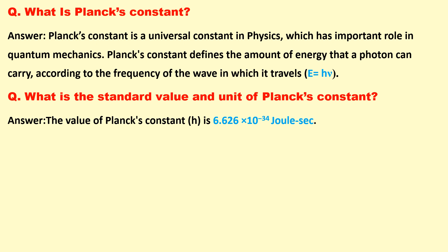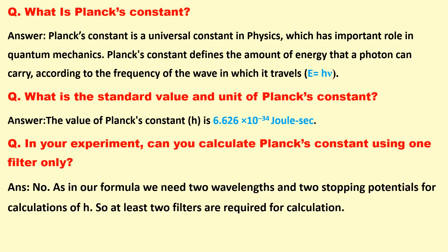What is the standard value and unit of Planck's constant? Planck's constant is 6.626 into 10 to the power minus 34 joule second. In your experiment, can you calculate the Planck constant using one filter only? The answer is no. As in our formula we need two wavelengths and two stopping potentials for calculation of H, so at least two filters are required for the calculation of H.